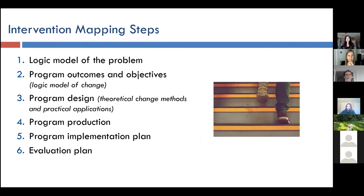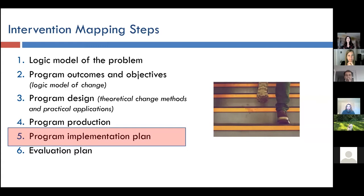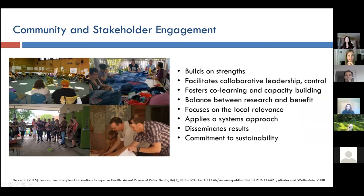Intervention mapping is made up of six steps with multiple tasks within those steps. Since its development — which now has over a 20-year history — planning implementation was a fundamental step, done after you have an initial program. Community and stakeholder engagement is a foundational tenant of intervention mapping, and the idea is that engagement happens throughout the planning process.